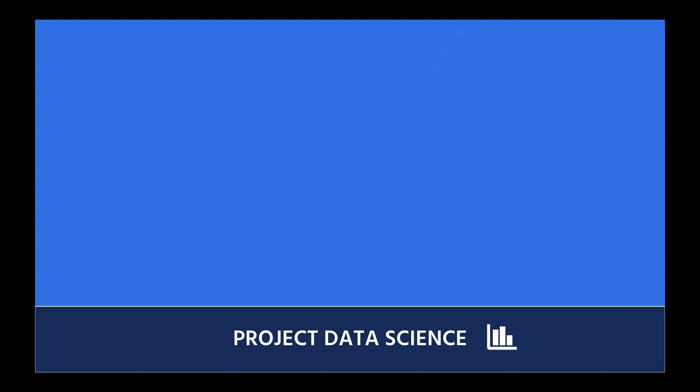Let's talk about what we're going to be doing in this tutorial. First, we're going to set up Python. There are several different ways to install Python, but I'm going to show you how I like to do it, which also ties into the virtual environments we're going to be using. We're going to talk briefly about the terminal - where you can launch Python from, run Python files, and open up your project directory inside your code editor.